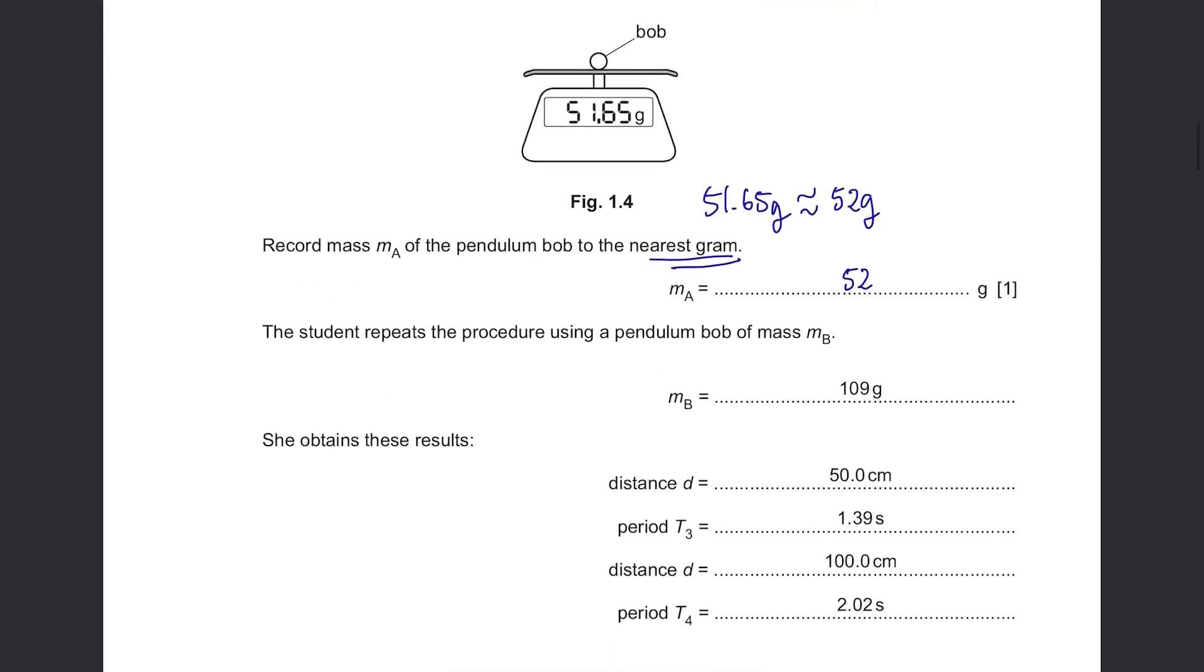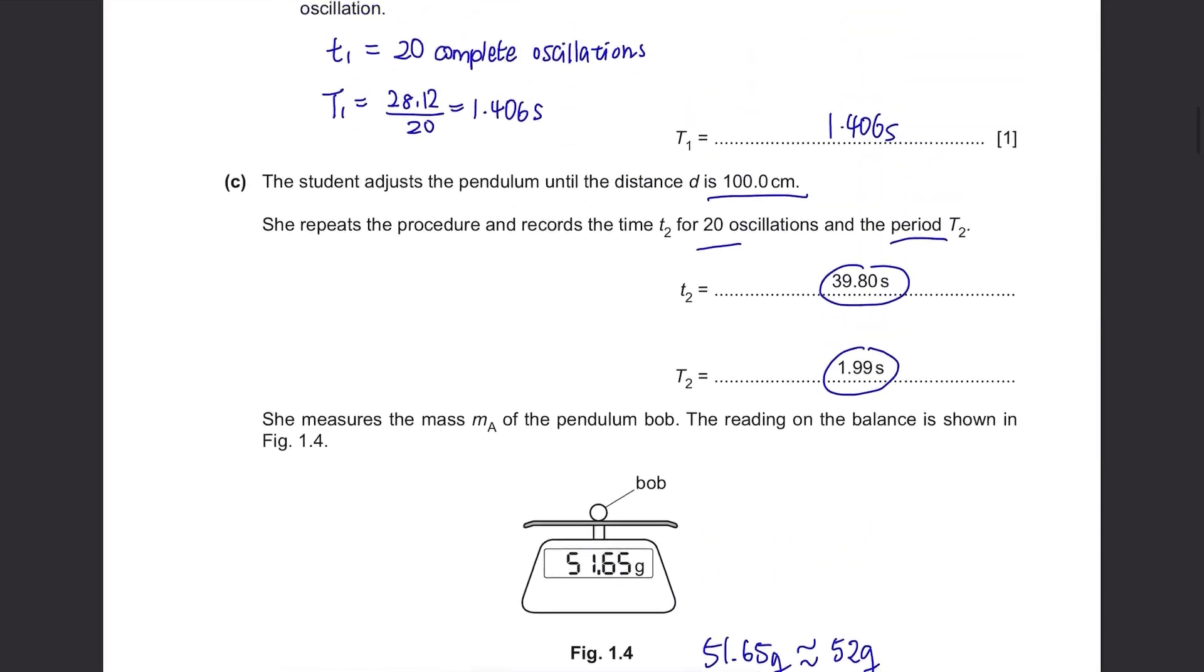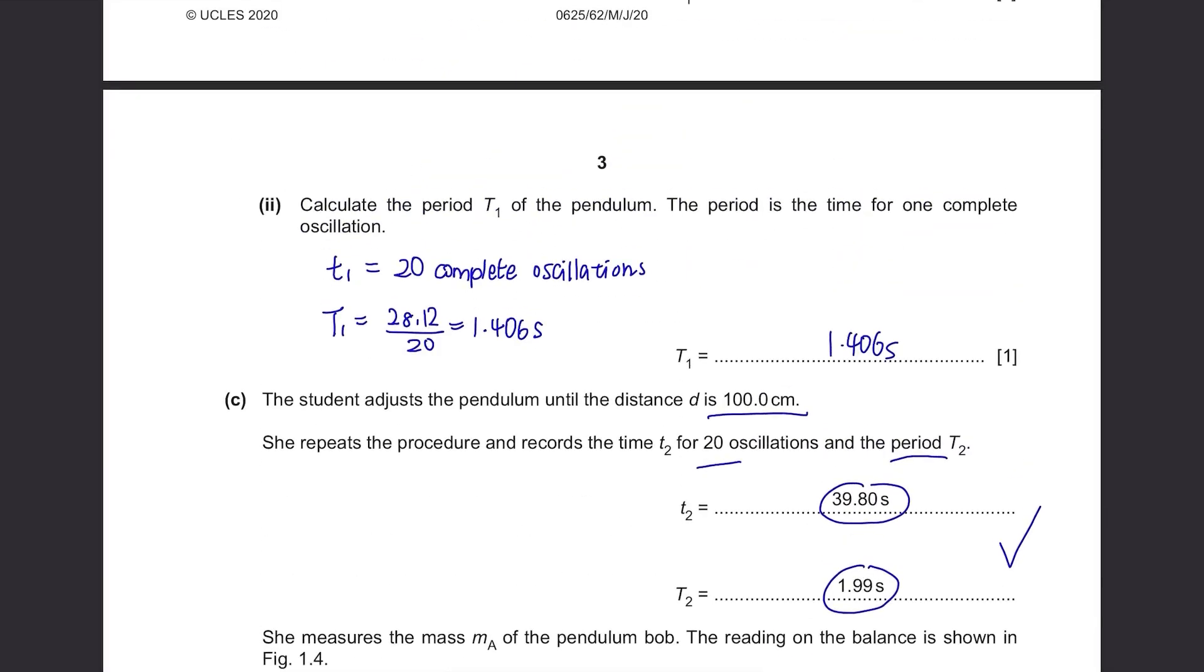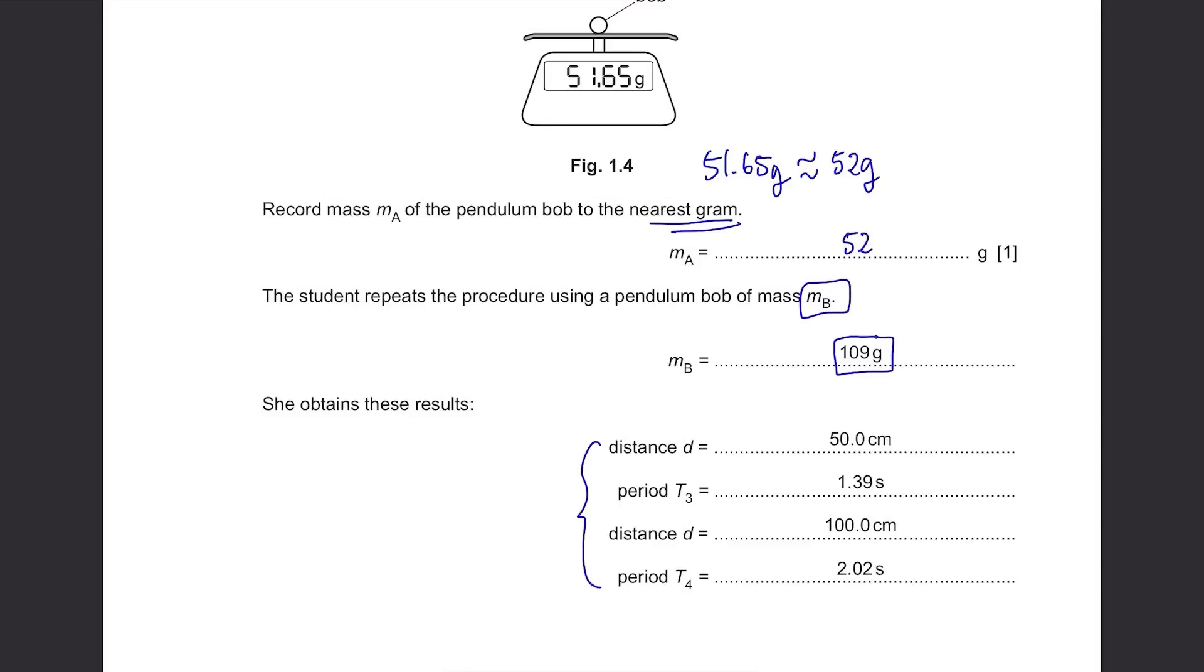The student repeats the procedure using a pendulum bob of mass mb. This time the mass of the bob increased. She obtains these results. So until now, these results were with a bob of 52 grams. And these results were after using a bob of 109 grams.